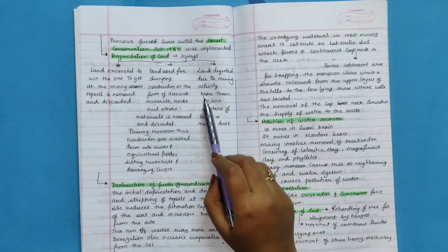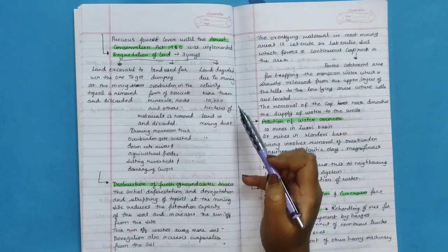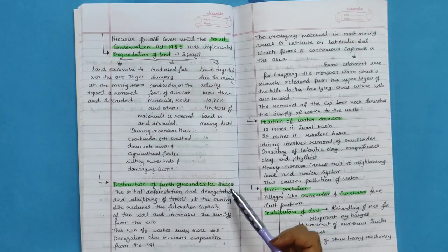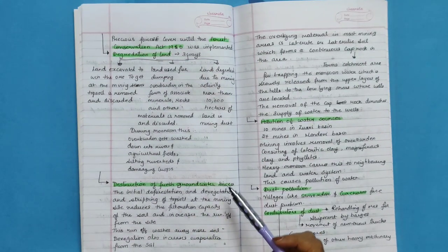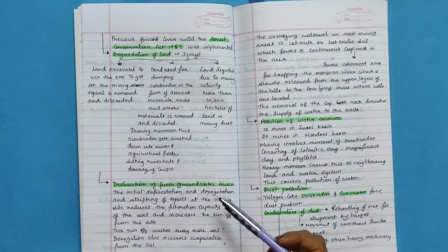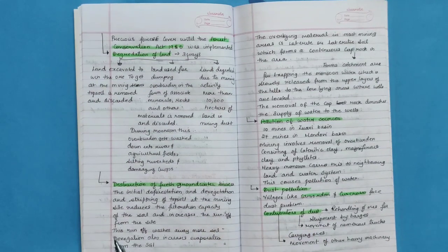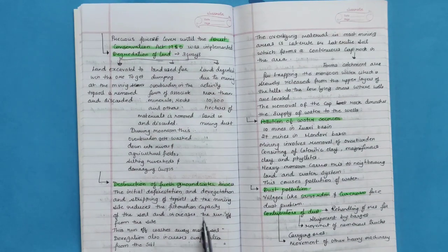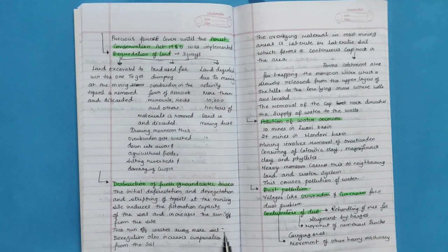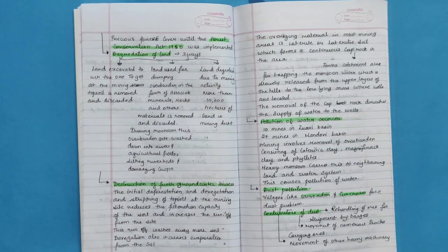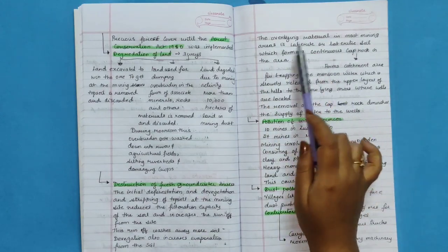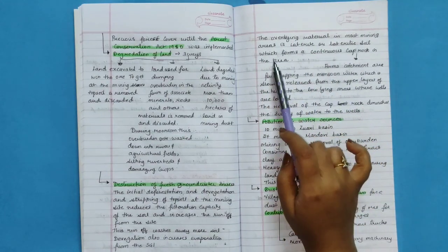And lastly, land degraded due to mining activity. More than 10,000 hectares of land is mining dust. Destruction of fresh groundwater sources. The initial deforestation and de-vegetation and stripping of tropical topsoil at the mining site reduces the filtration capacity of the soil and increases the runoff from the site.